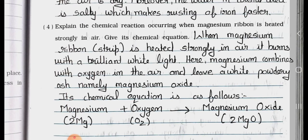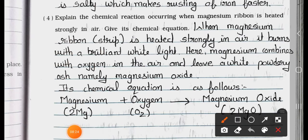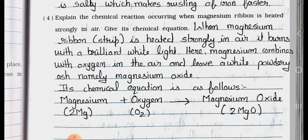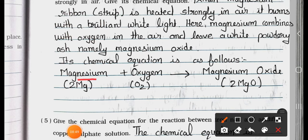Question number 4: Explain the chemical reaction occurring when magnesium ribbon is heated strongly in air. Give its chemical equation. Answer: When magnesium ribbon is heated strongly in air, it burns with a brilliant white light. Magnesium combines with oxygen in the air and leaves a white powdery ash, namely magnesium oxide. The chemical equation is: 2Mg + O₂ → 2MgO.